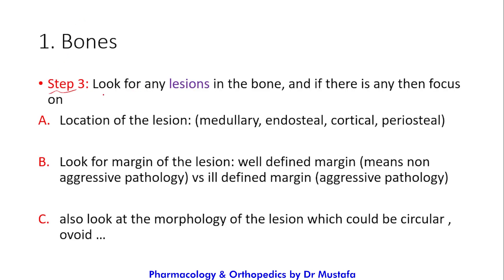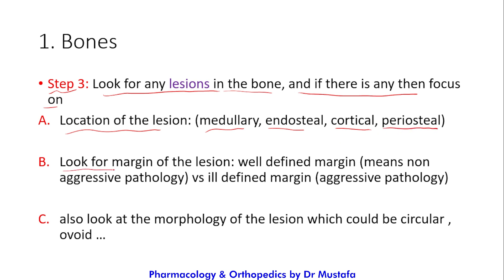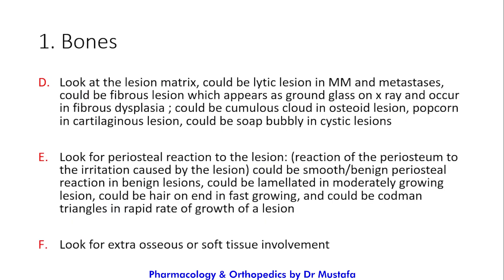In step three, look for any lesions in the bone. First, focus on the location: is it in the medullary, endosteal, cortical, or periosteal part of the bone? Look at the margins — a well-defined margin suggests non-aggressive pathology, while an ill-defined margin suggests aggressive pathology. Also look at the morphology of the lesion: is it circular, ovoid, etc.?